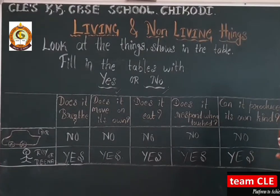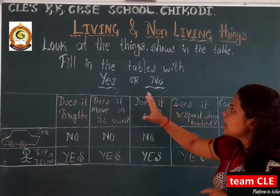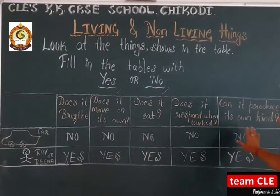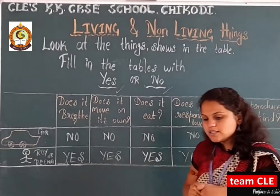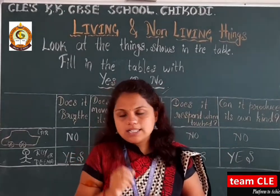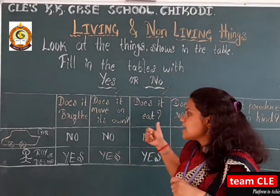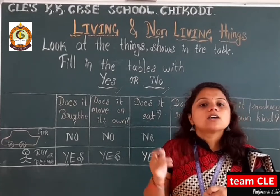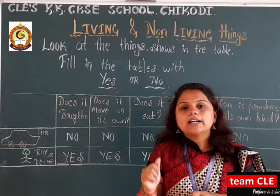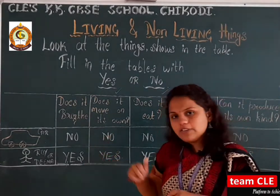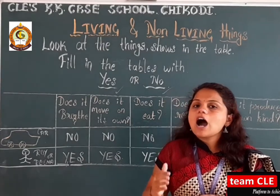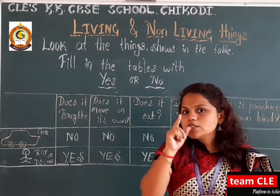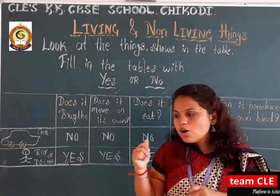So here we have shown our table — look at the pictures or things shown in the table and fill in the blanks with yes or no. We got all the answers. Now, what is your homework for today? While coming to next class, think about whether living things like Roy and Reena — how they breathe, and whether they need food and water to survive.